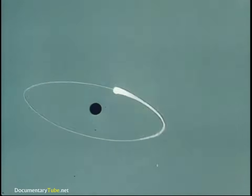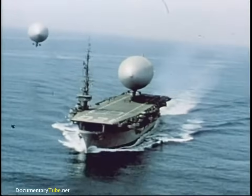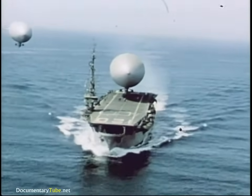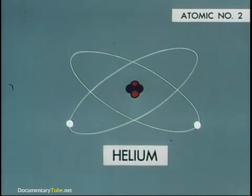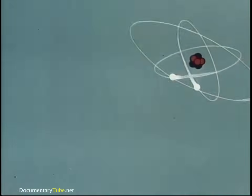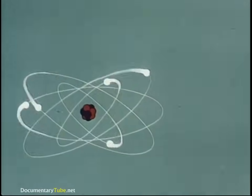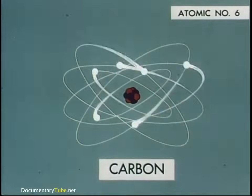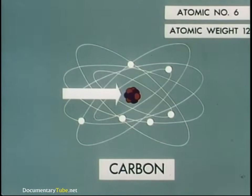One rung above hydrogen on the ladder of elements is helium. One of the uses for helium you're probably familiar with is in lighter-than-air aircraft. A helium atom has two electrons and a nucleus composed of two protons plus two neutrons. So helium has the atomic number two, same as the protons which it possesses, and an atomic weight of four, its protons plus neutrons. Going up the ladder, we find elements with atoms that become progressively complicated with more electrons and increased numbers of protons and neutrons in their nuclei. For example, a neutral carbon atom with an atomic number of six has six electrons. In the nucleus are six protons plus six neutrons, so the atomic weight is twelve.